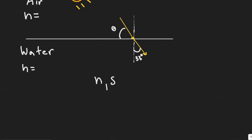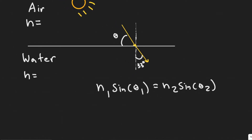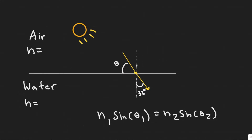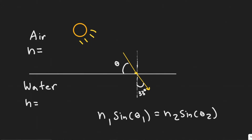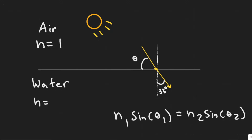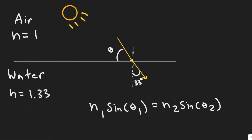Snell's Law is written as: N1 times the sine of theta 1 equals N2 times the sine of theta 2. N is the index of refraction — it's a different value depending on the type of medium. Air has a value, water has a value, and it basically determines how much light is going to bend in that material. Since we're dealing with air and water, the index of refraction for air is 1, and for water it's 1.33.